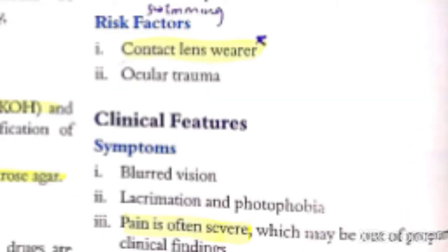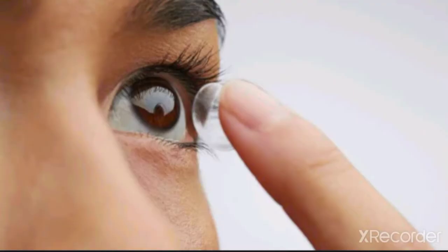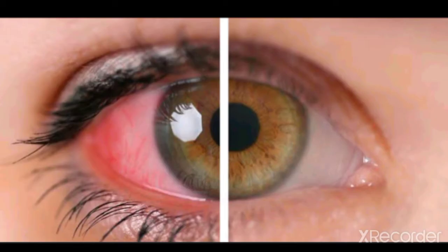What are the risk factors? The most important risk factor is contact lens use. Contact lenses are used for eyesight correction, and ocular trauma is another risk factor. The typical scenario is that contact lens users develop keratitis, so you have to remember that acanthamoeba is responsible for that.